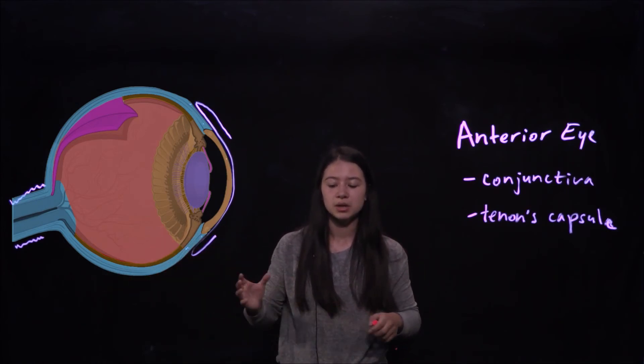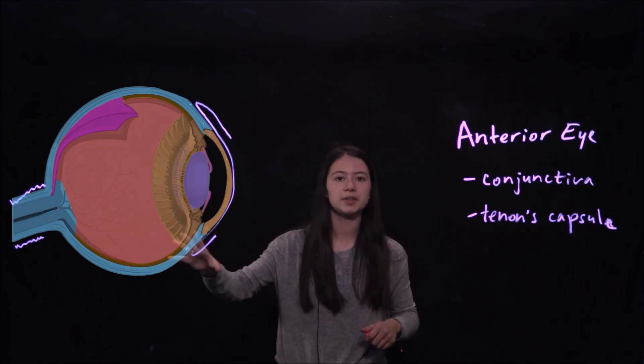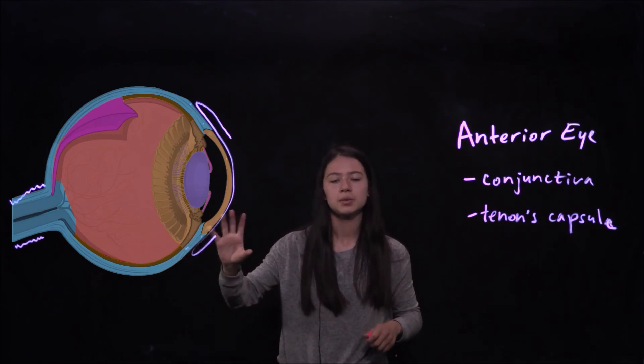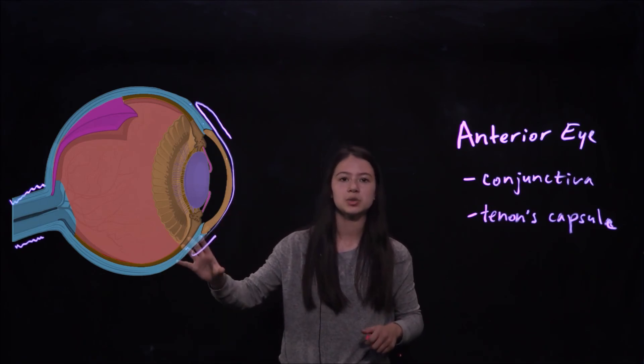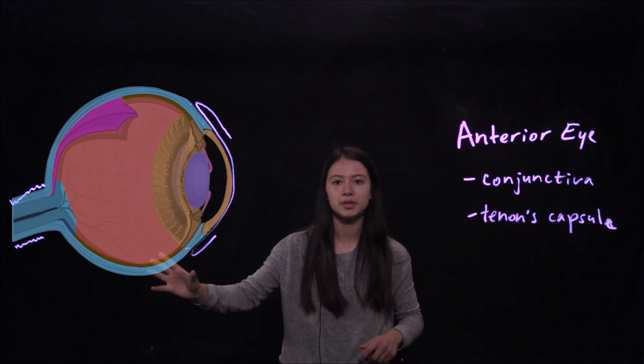It's a lot thicker near the inferior eye, which makes surgery of the inferior rectus muscle and the inferior oblique very difficult.